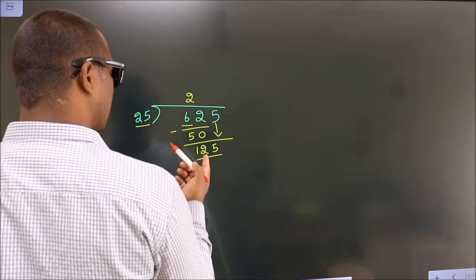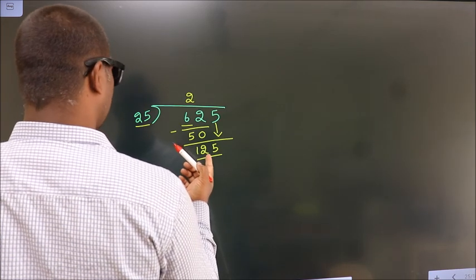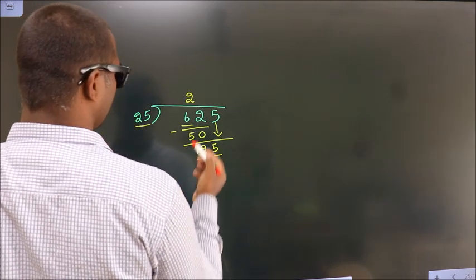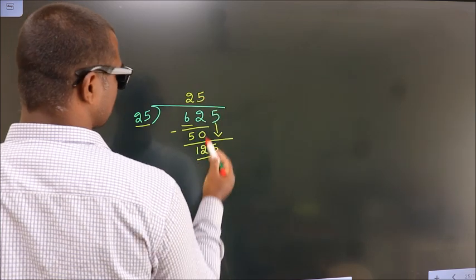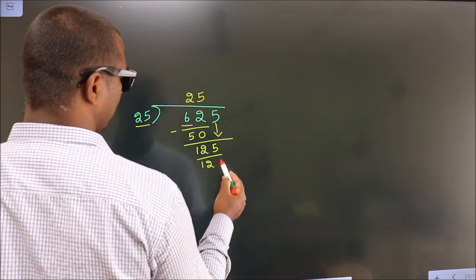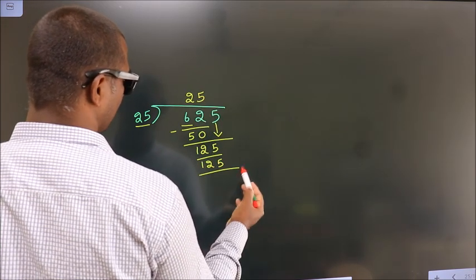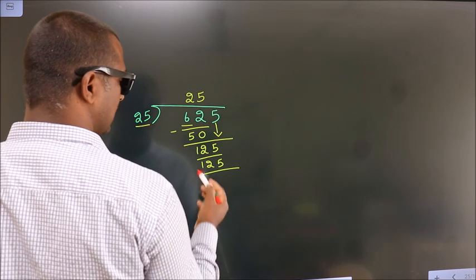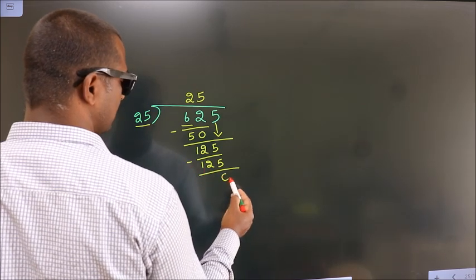When do we get 125 in the 25 table? 25×5=125. Now we subtract. We get 0.